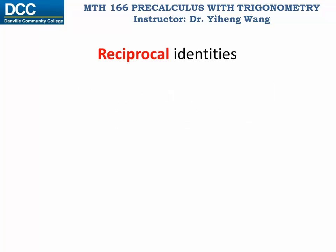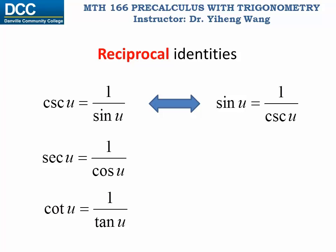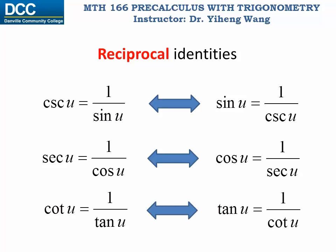We learned about the reciprocal identities when we first introduced the definition of the six trigonometric functions. Cosecant function is the reciprocal function of sine function, therefore cosecant u equals one over sine u. Secant function is the reciprocal of cosine function, and cotangent function is the reciprocal of tangent function. Since the reciprocal relation is mutual, sine u also equals one over cosecant u, cosine u equals one over secant u, and tangent u equals one over cotangent u.